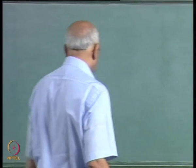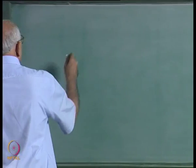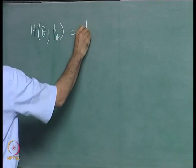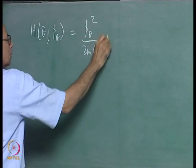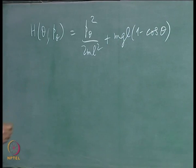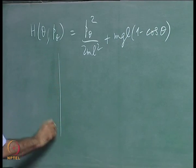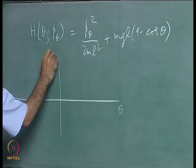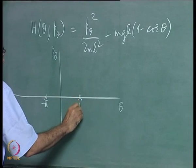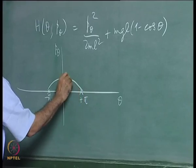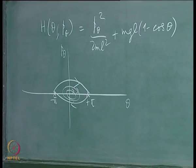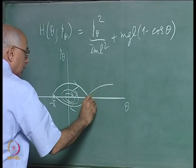Resuming the discussion of the simple pendulum problem, the Hamiltonian h(θ, p_θ) equals p_θ squared over 2mL squared plus mgl times (1 minus cos θ). We were specifically interested in finding the nature of the solution as a function of time on the separatrix, which takes you from the saddle point at -π to the saddle point at +π, with small oscillations and larger amplitude oscillations inside.